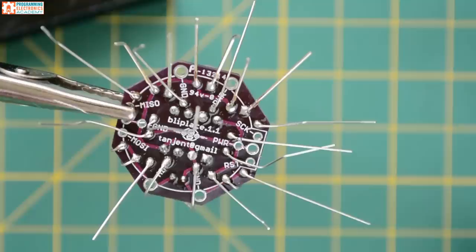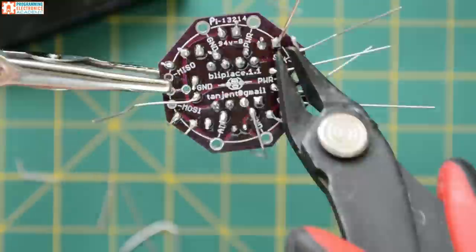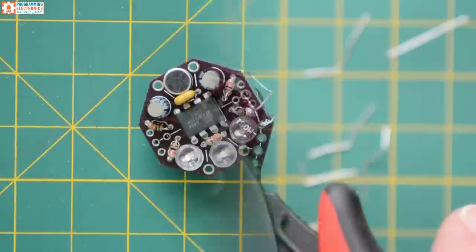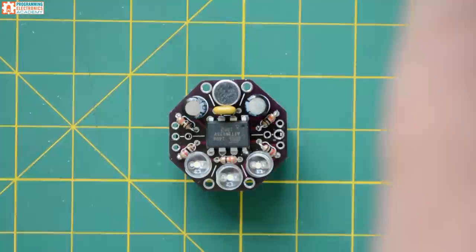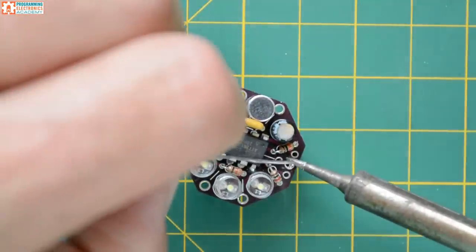It takes a CR32 coin cell battery to run. The battery doesn't come with the kit, but I have a ton of them just sitting around, so I just popped it in there. And it fits really well into the battery holder on the back of the PCB.